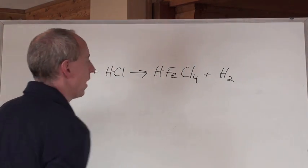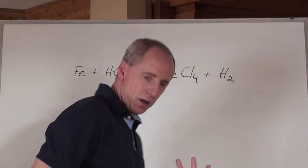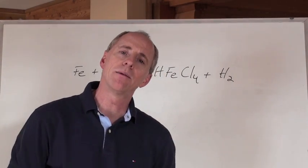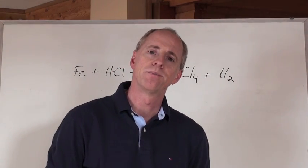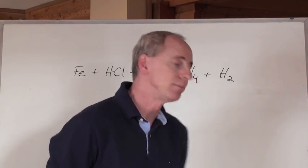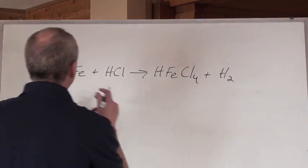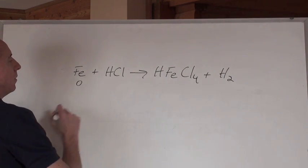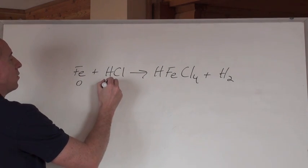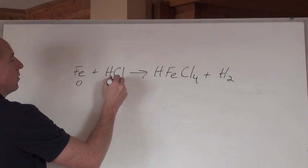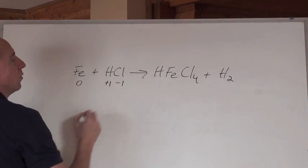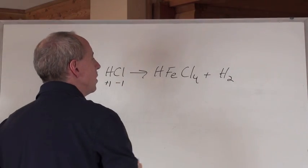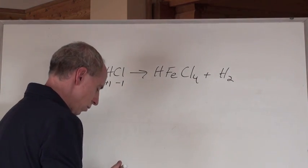You look at this equation and say, okay, can I assign an oxidation number for every single element that's here? Yeah, you can. This is iron by itself — it's an element, that's a zero. Hydrogen is always plus one. That makes the chlorine negative one. Now, this looks kind of kooky in here, so how would you do that?